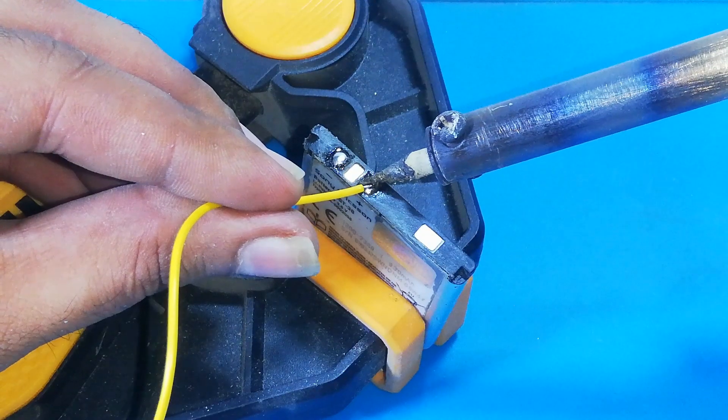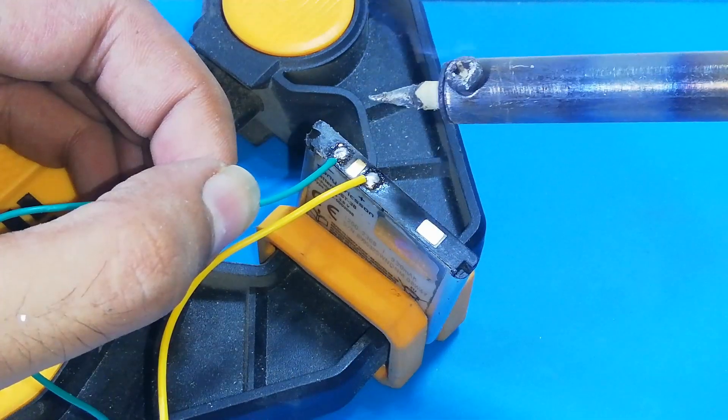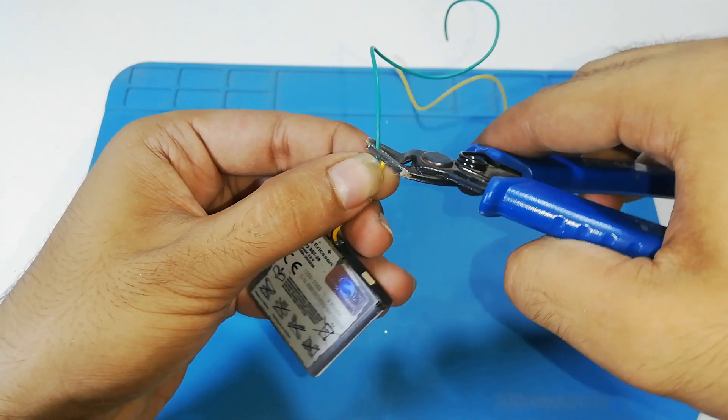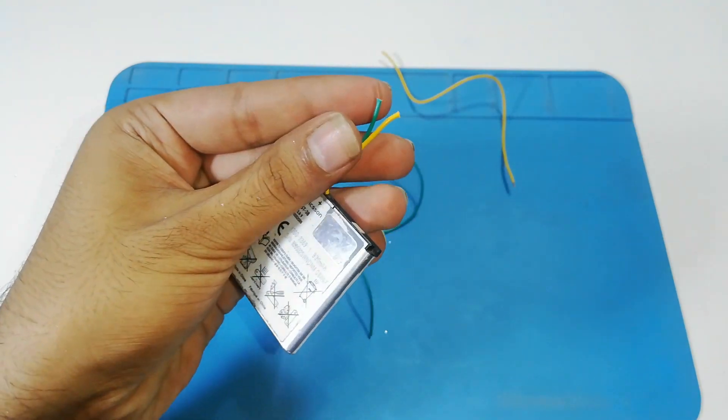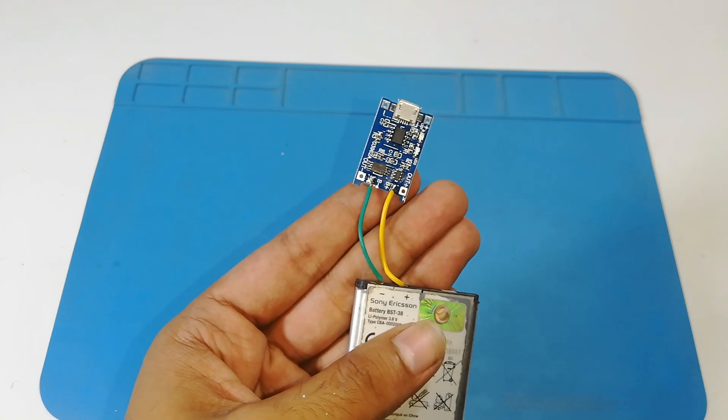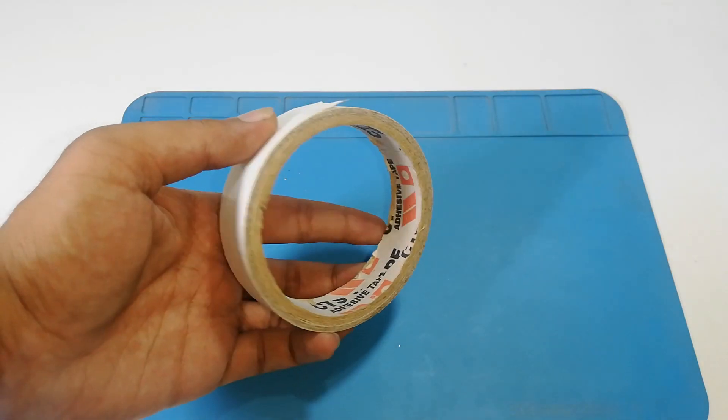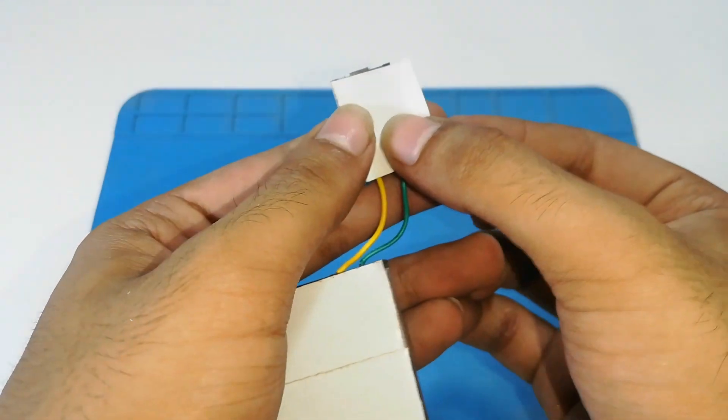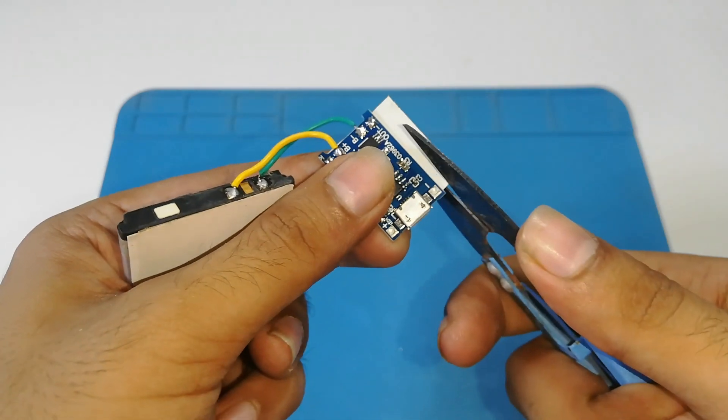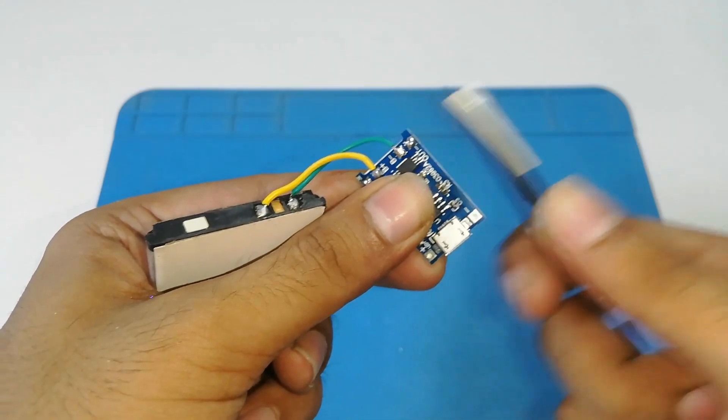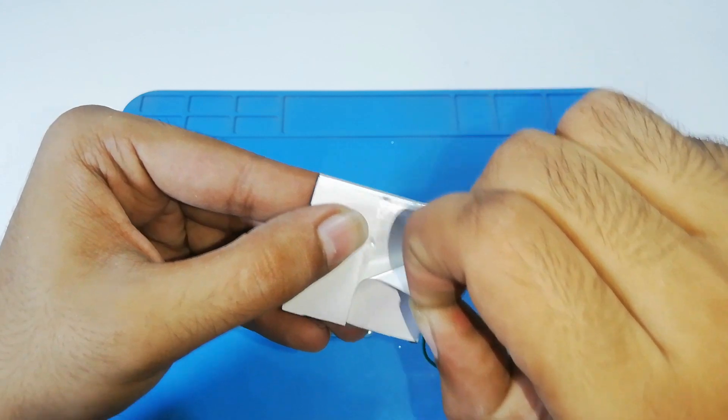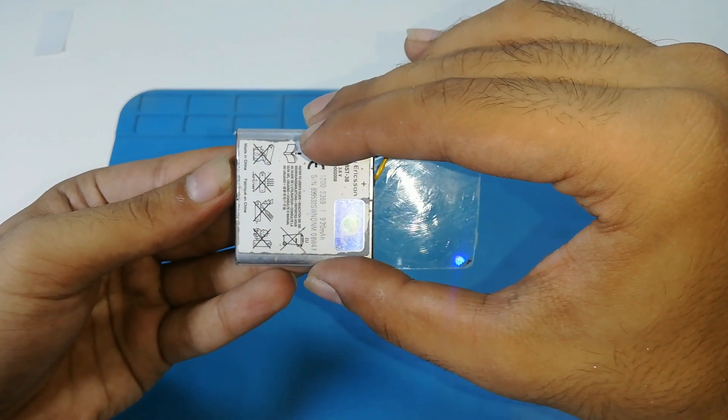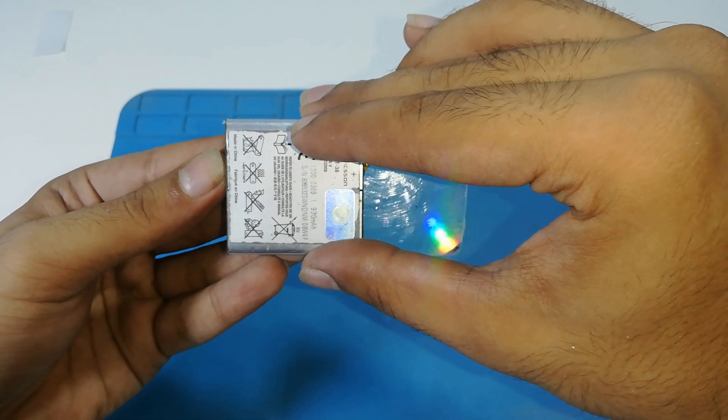Solder the wires to the battery and the charging module. With the help of some double-sided tape, place the battery and the charging module on one of the CD pieces. I am using some hot glue to secure them properly.